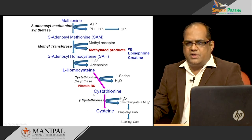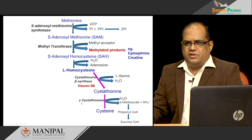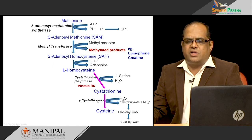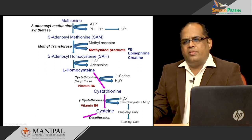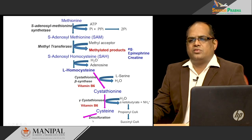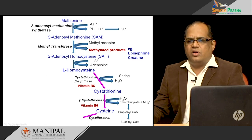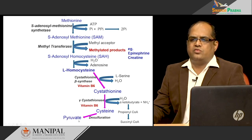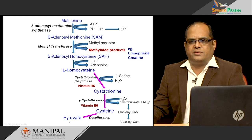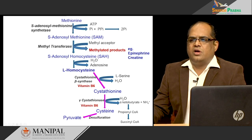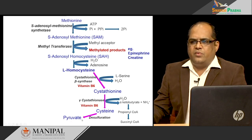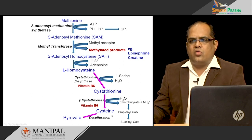This is also a vitamin B6 dependent reaction. Then cysteine undergoes desulfuration — removal of the sulfur group — to form pyruvate. That is one way of converting homocysteine into cysteine and pyruvate, with succinyl-CoA as another product.